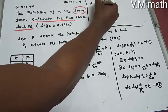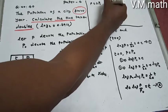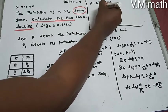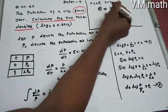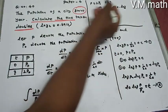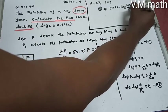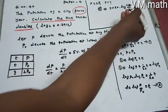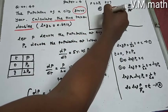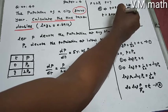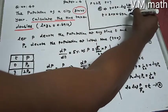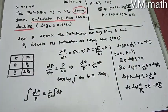Substituting P equals 2 P0 into the equation: T equals 20 times log of (2P0 divided by P0). The P0 terms cancel, giving T equals 20 times log 2. Since log 2 equals 0.6912, we get T equals 20 times 0.6912, which equals 13.824.